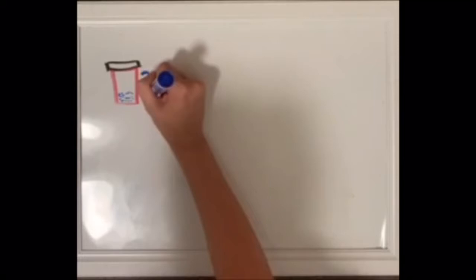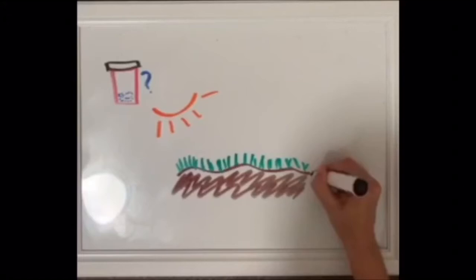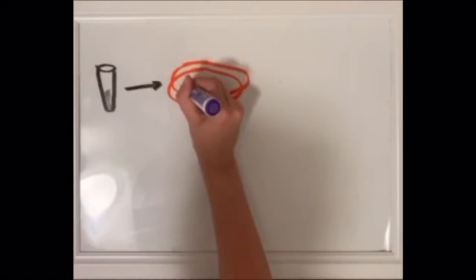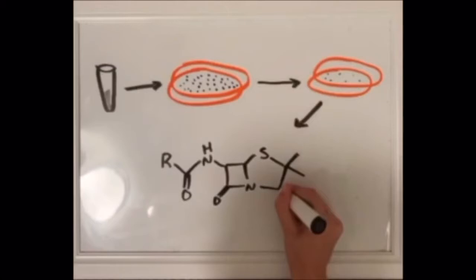But where do those nice little pills in our medicine bottle come from? They start as compounds produced in nature by soil microbes and fungi. Scientists collect the soil, grow the microbes in a lab, isolate microbes that produce antibiotics, then isolate the antibiotics.